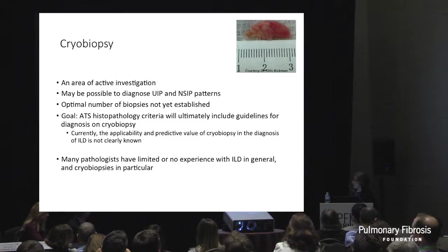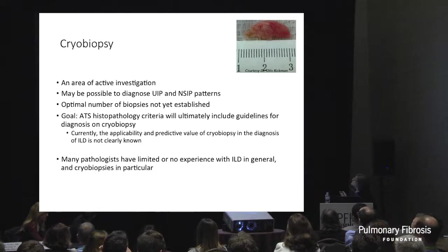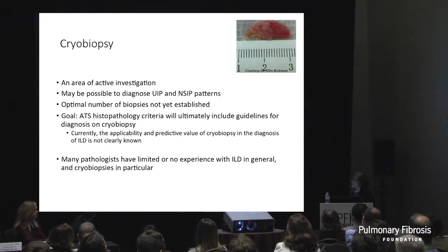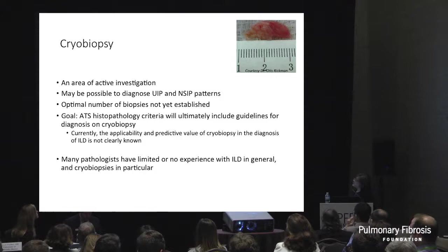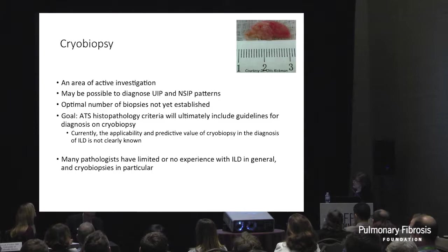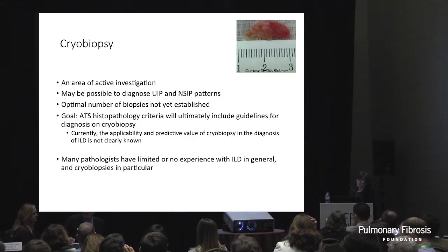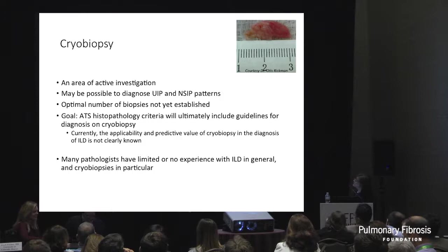A word about cryobiopsy — others know more about this than I do. One particularly outstanding specimen looks almost like a minor wedge, almost two centimeters in length, though most are 0.8 to 1.2 centimeters at maximum dimension. We're doing some work on this at Vanderbilt. It looks like it may be possible to diagnose UIP and NSIP with some frequency, but it's not perfect. The optimal number of biopsies is unknown, there are some complications, and the predictive value of cryobiopsy for the diagnosis of ILD is not yet established.